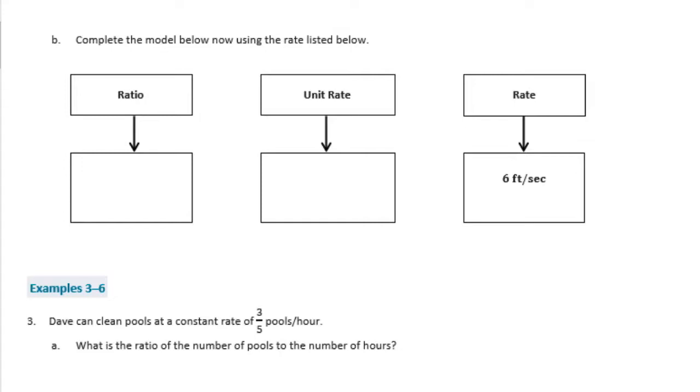Complete the model below now using the rate listed below. So this time they've given us the rate over here at 6 feet per second. We need to figure out the rate. So the rate would just be 6. The unit rate is 6. And the ratio, there's many different ratios you could choose. We could have 6 to 1, or 12 to 2, 60 to 10. There's an infinite number of choices that you could choose for the ratio.